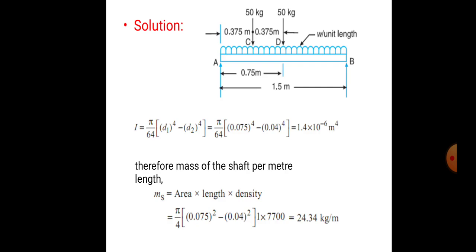Taking down the formulations: I equals pi over 64 times (d1⁴ minus d2⁴) equals 1.4 × 10⁻⁶ m⁴. Before starting the formulations, we draw the diagram showing bearings A and B as a simply supported beam with masses. At 0.375 m from A we have one 50 kg mass, and at the center (0.75 m) another 50 kg mass. Total length is 1.5 m.